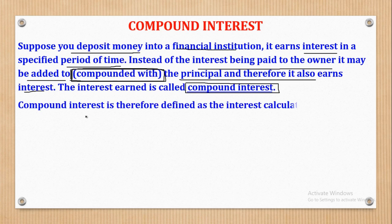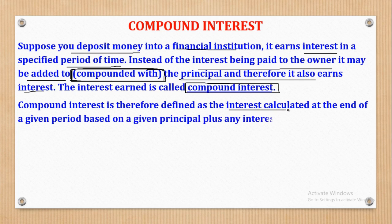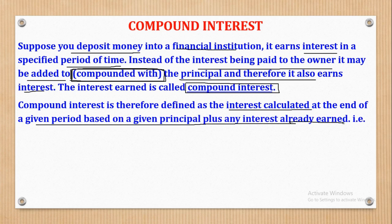In brief, compound interest is the interest calculated at the end of a given period, based on a given principal plus any interest already earned. As we have seen, every interest at the end of every year is compounded to the original principal to get the new principal.